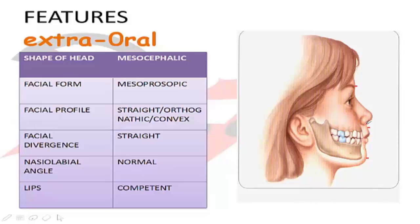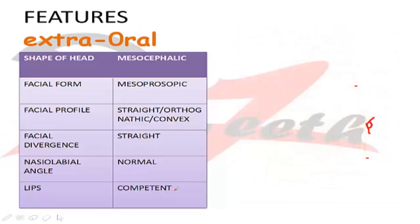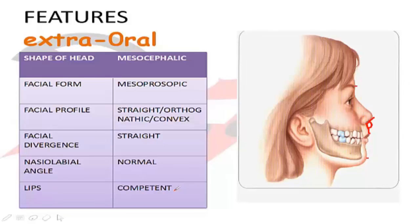The nasolabial angle is formed by drawing a tangent to the base of the nose and a tangent on the lip, then measuring the angle. Normally it is 90 to 110 degrees. Lips are competent — when the patient is at rest, the lips will be covering the teeth, or there can be one to two millimeters of space between the lips, which is considered normal. Everything appears normal extraorally in Class 1 cases.